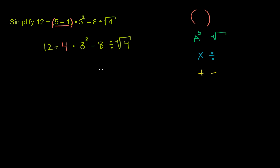Now we've got all our parentheses out of the way. Do we see any exponents? Well, I have this 3 to the second power, 3 squared. And I also have the square root of 4. So let's evaluate those next.